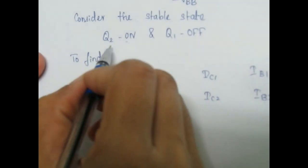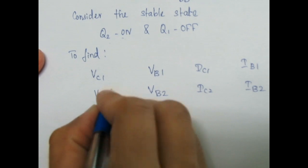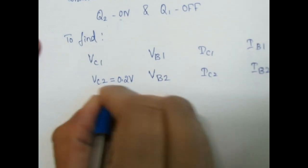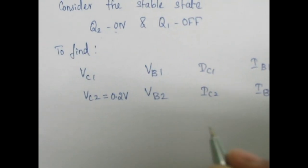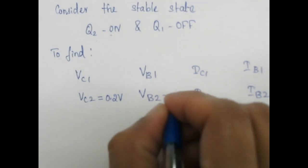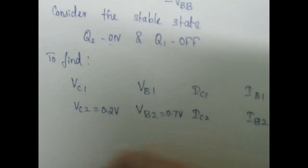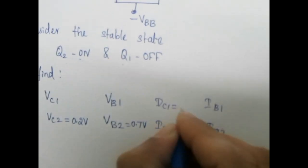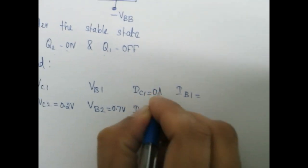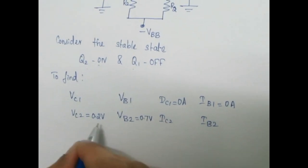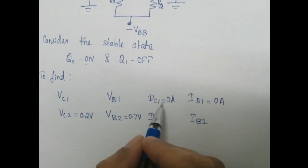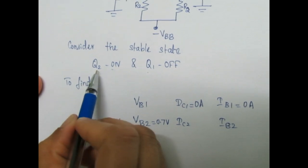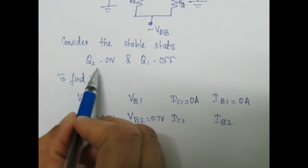If Q2 is ON, then its collector voltage is equal to the saturation voltage. For a silicon transistor, the saturation voltage is approximately 0.2 V, and the base voltage is approximately 0.7 V. If the transistor is OFF, its collector current and base current will be equal to zero. So if Q1 is OFF, its collector current and base current will be equal to zero.